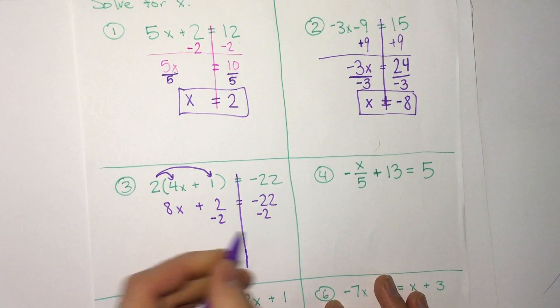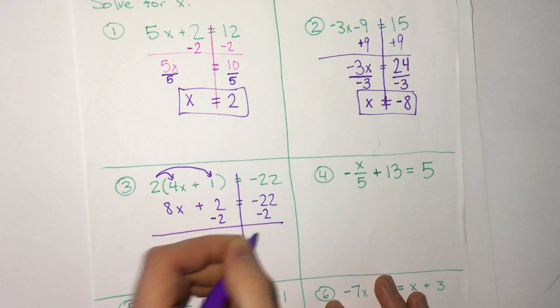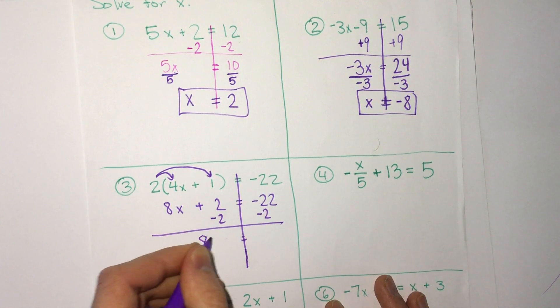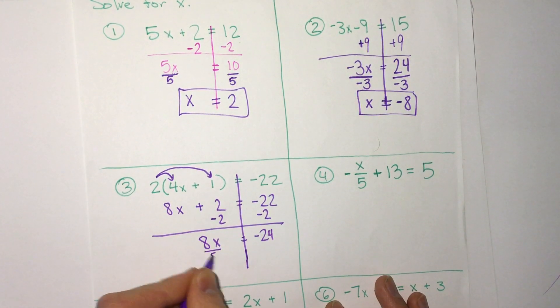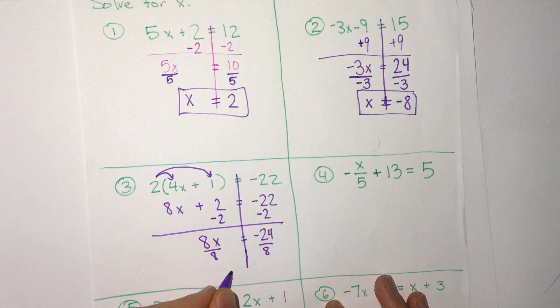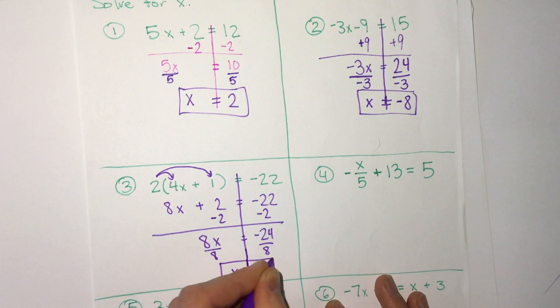Start with addition and subtraction. Subtract 2 from both sides, we get 8x equals negative 24. Divide by 8, we get x equals 24 divided by 8 is 3, and the negative makes it negative, so we get negative 3.